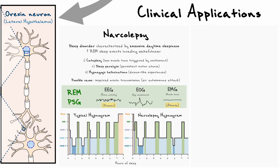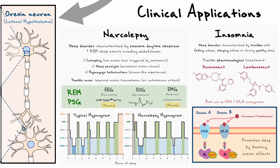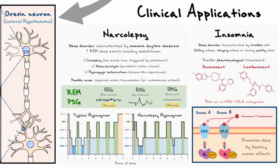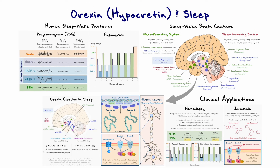The last clinical application I want to consider relates to insomnia, which is a sleep disorder characterized by troubles with falling asleep, staying asleep, or having good quality sleep. When we consider pharmacological treatments for insomnia, one class of drugs that has recently gained traction takes advantage of the orexin transmission system. Two of these drugs that have been FDA approved in the past few years include suvorexant and lemborexant. These two drugs both act as orexin receptor antagonists, meaning they take the spot of orexin A and orexin B on the receptors and prevent orexin from mediating its function. Since orexin promotes wakefulness, these two drugs block that effect and promote sleep. This concludes our brief overview on orexin transmission in the brain and its effects on sleep.